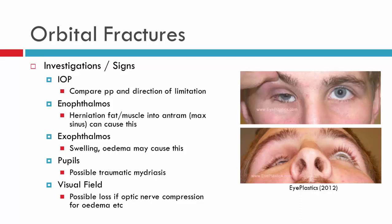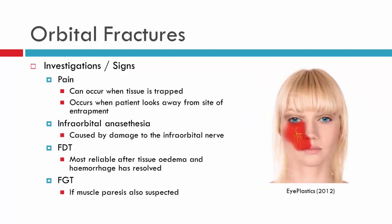Always check pupils — you could end up with traumatic mydriasis in some instances. Visual fields are performed if you suspect optic nerve compression. Patients may complain of pain when looking towards the area of limitation, generally caused by trapped tissue. Infraorbital anaesthesia can occur if there has been damage to the infraorbital nerve, producing numbness in the corresponding region. Forced duction tests and forced generation tests can assist in diagnosis — the forced duction should be positive with a mechanical restriction. However, early on when there is significant swelling, the forced duction test can be unreliable and becomes more reliable approximately two weeks after the initial injury.